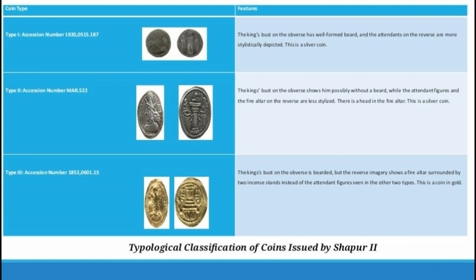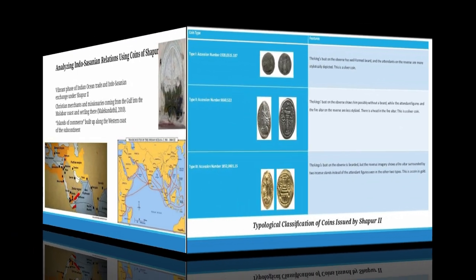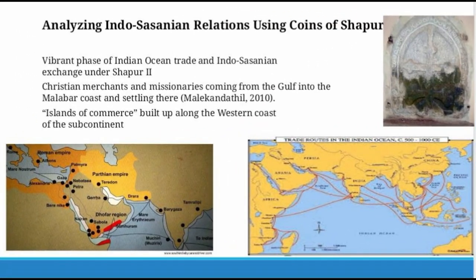There are minor variations between these types. The king is generally facing right, but sometimes shown with a well-formed beard, sometimes at a younger stage as a clean-shaved figure, and sometimes with a rudimentary beard. They are also stylistically different. We are now using these coins to understand how they were being circulated along the Indian Ocean.